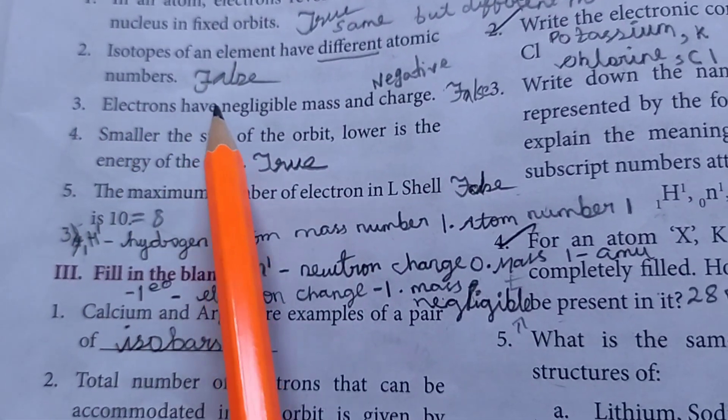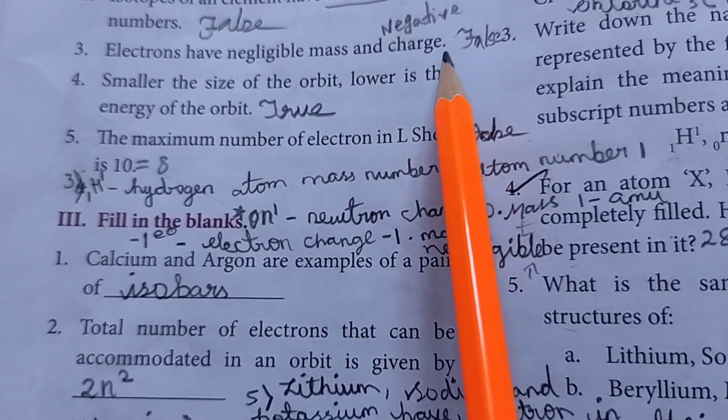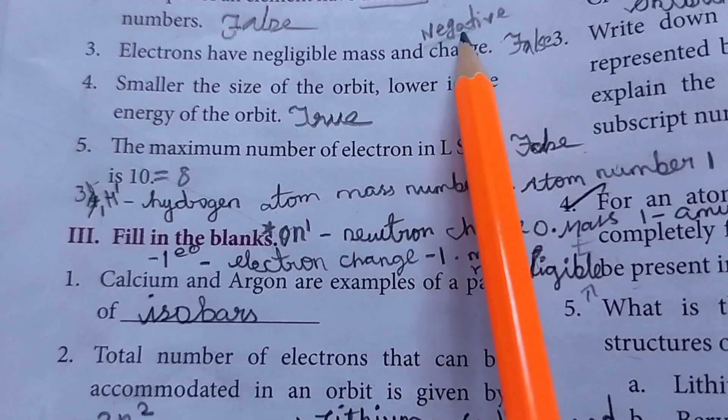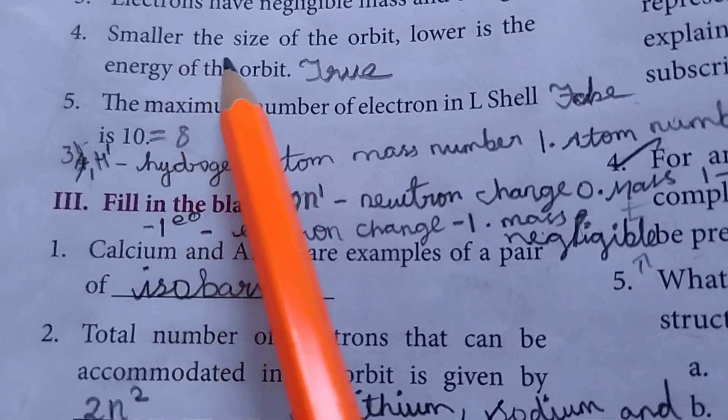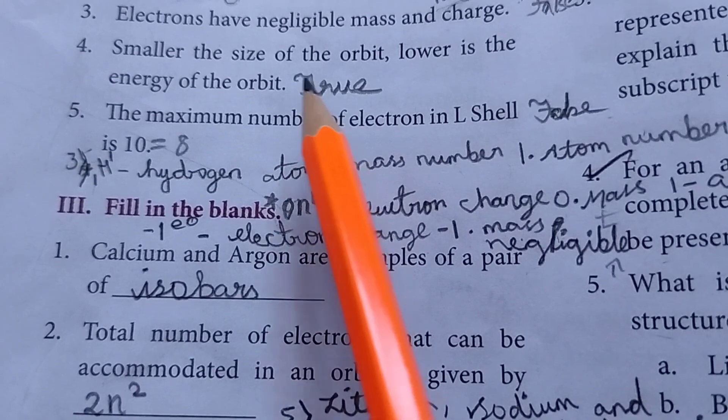Then third one electrons have negligible mass and charge. The answer is false. The charge is negative. The answer is true. Then fourth one. Smaller the size of the orbit. Lower is the energy of the orbit. The answer is true.